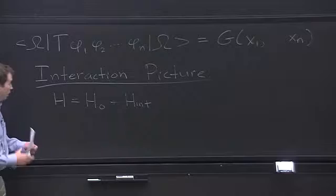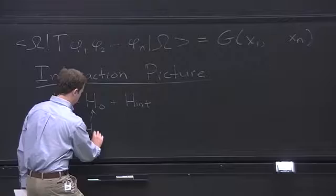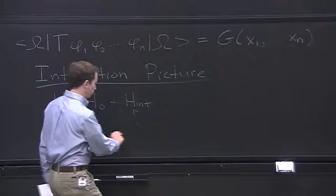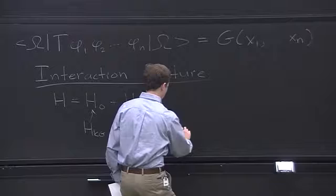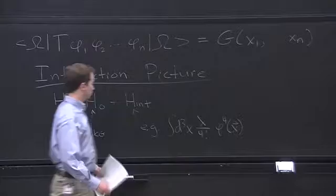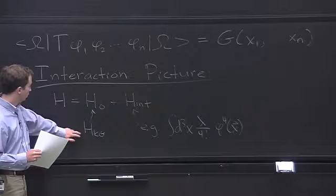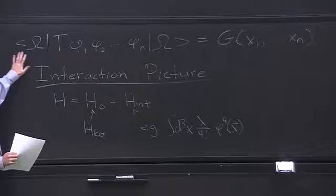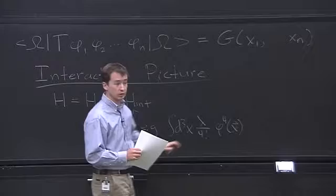We want to write our full Hamiltonian as the free Hamiltonian plus some interaction. For the case we'll be interested in, the free Hamiltonian is the Klein-Gordon Hamiltonian. As a particular example, we could take the interaction to be the integral of lambda over 4-factorial times phi to the fourth. We can treat this as a perturbation if the parameter lambda is small, and our strategy is to evaluate these Green's functions as a perturbation series in lambda.